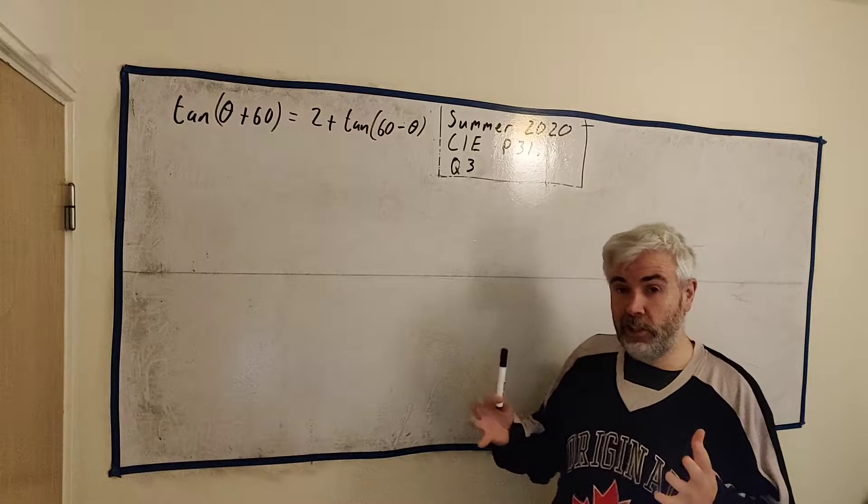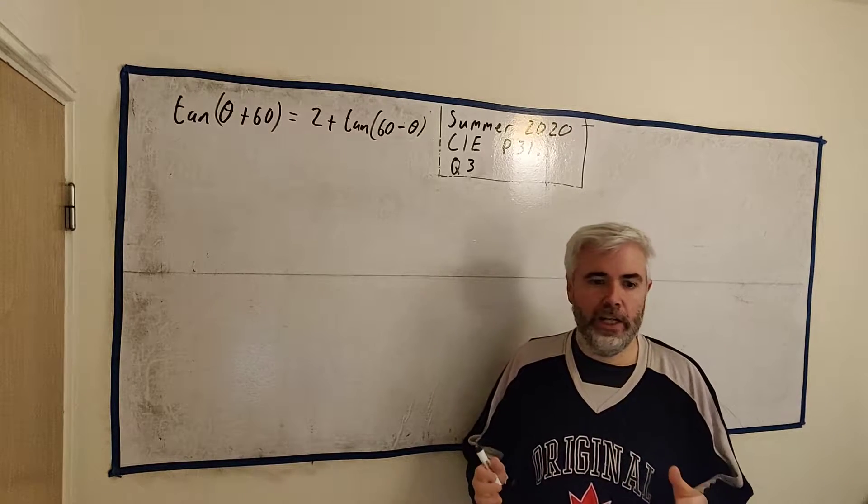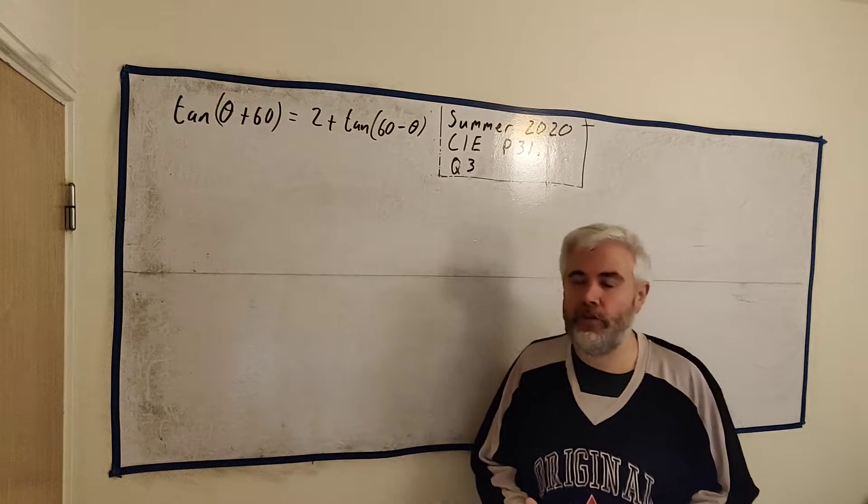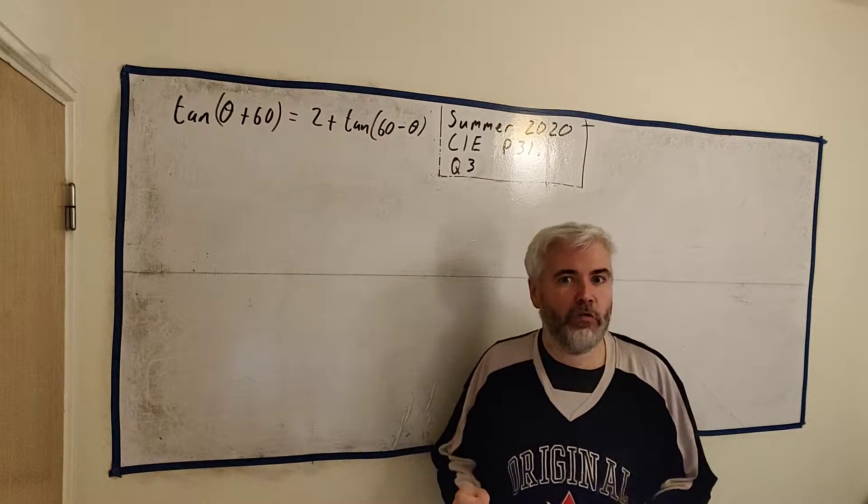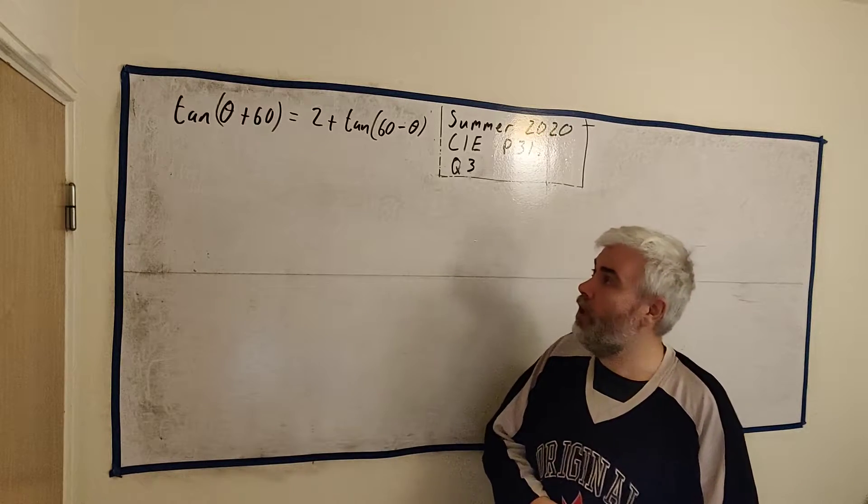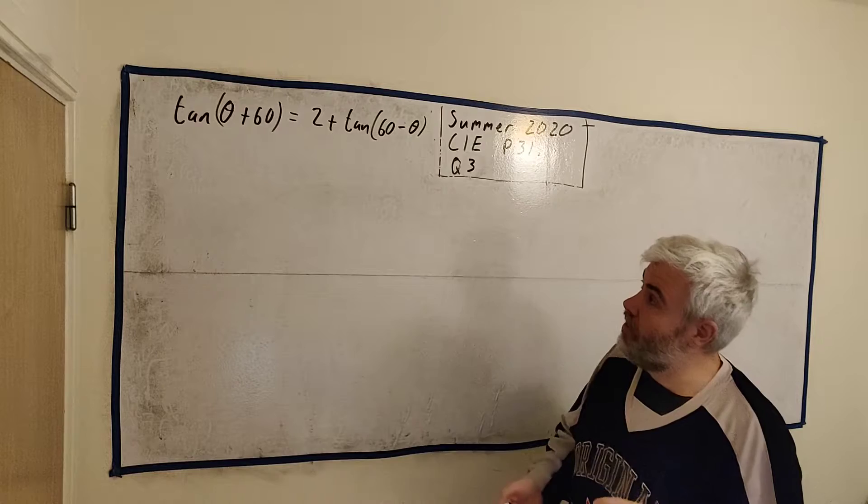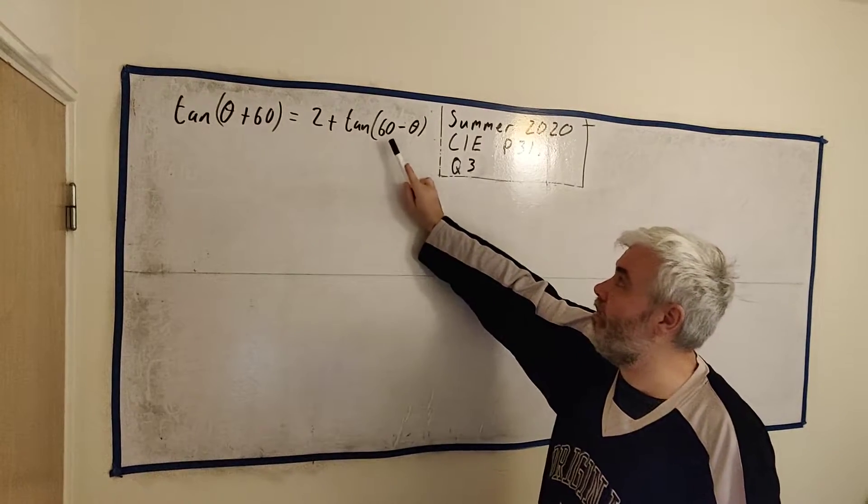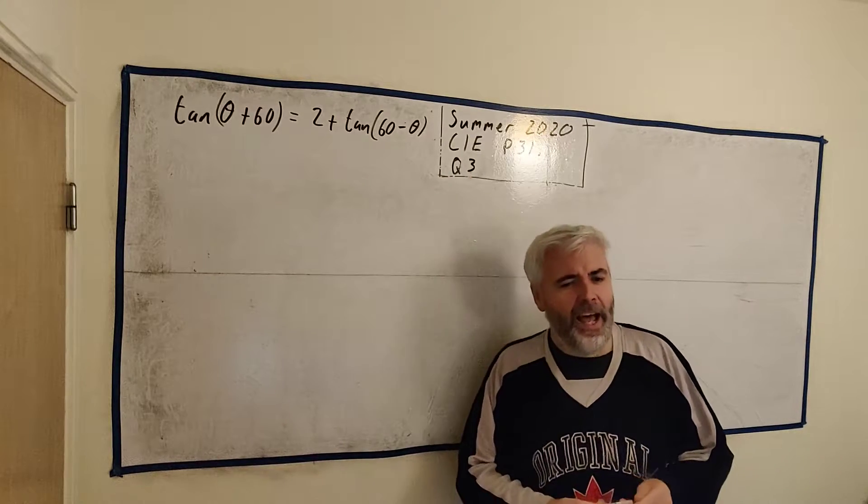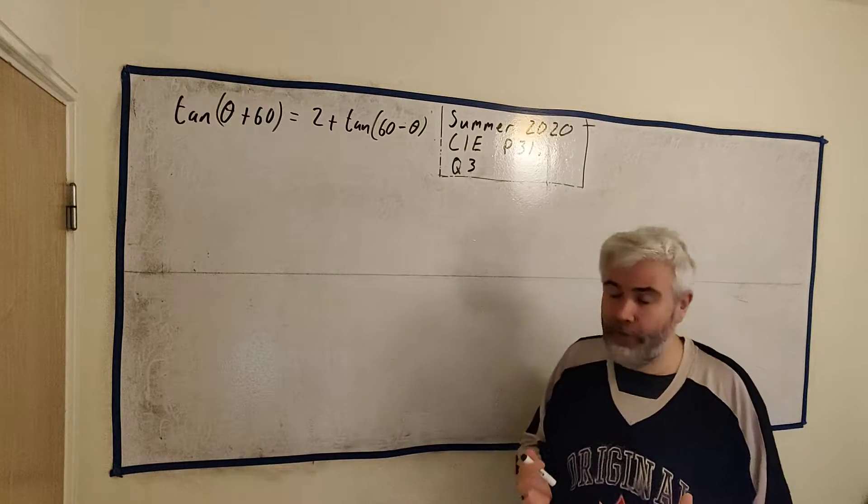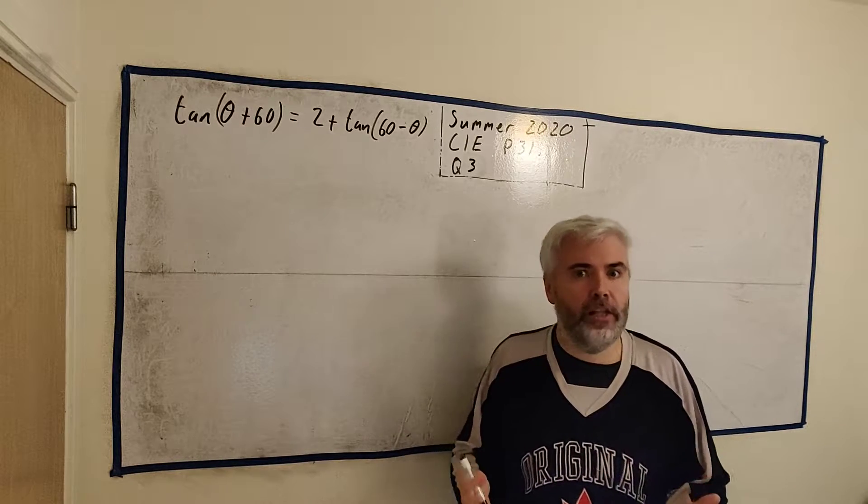This question isn't actually too difficult but it is really long and really complicated so I'm sure there's lots of students out there who keep getting the wrong answer. Really you just have to go slowly through, it's going to take a lot of space to do and I'll do that now for you. The question gives us this equation here, tan(θ + 60) = 2 + tan(60 - θ). And it asks us to put that into a quadratic equation.